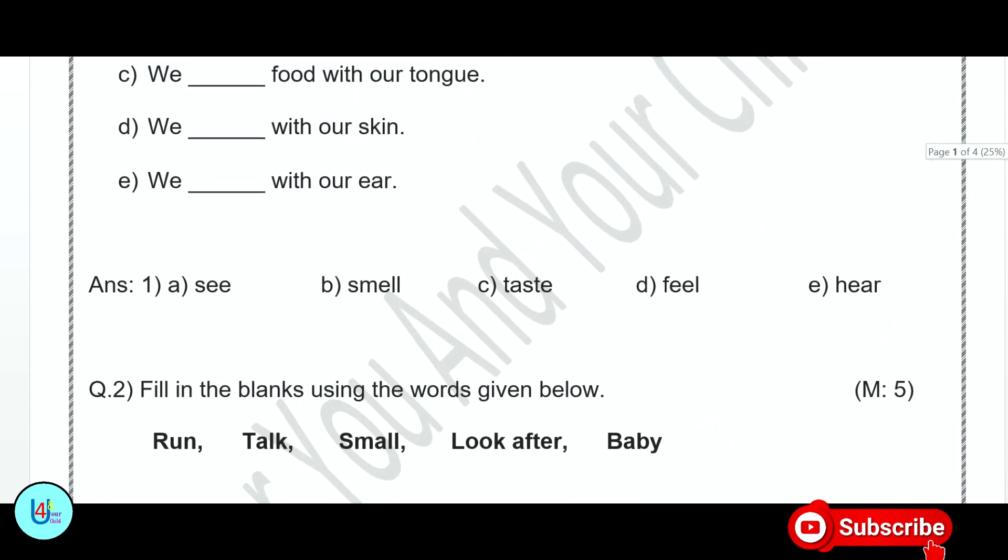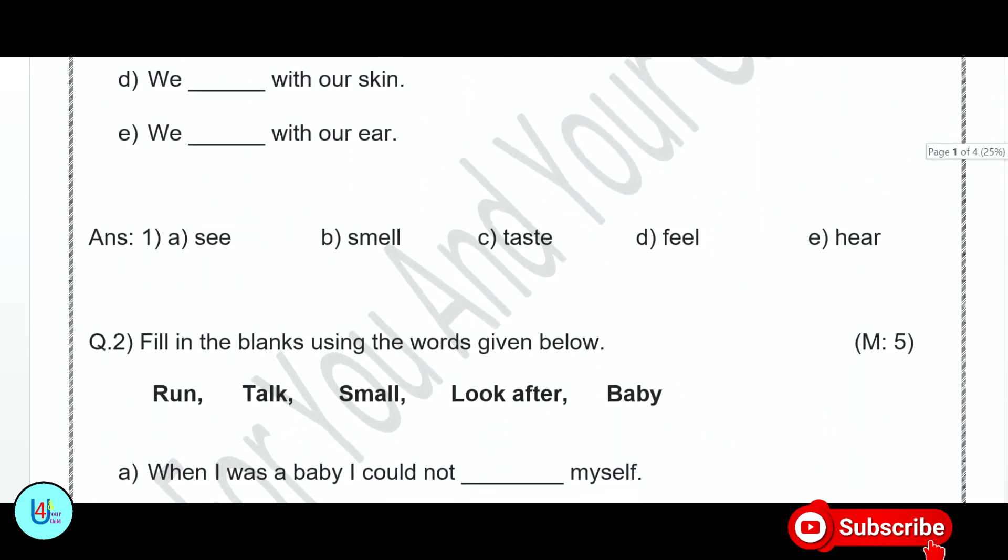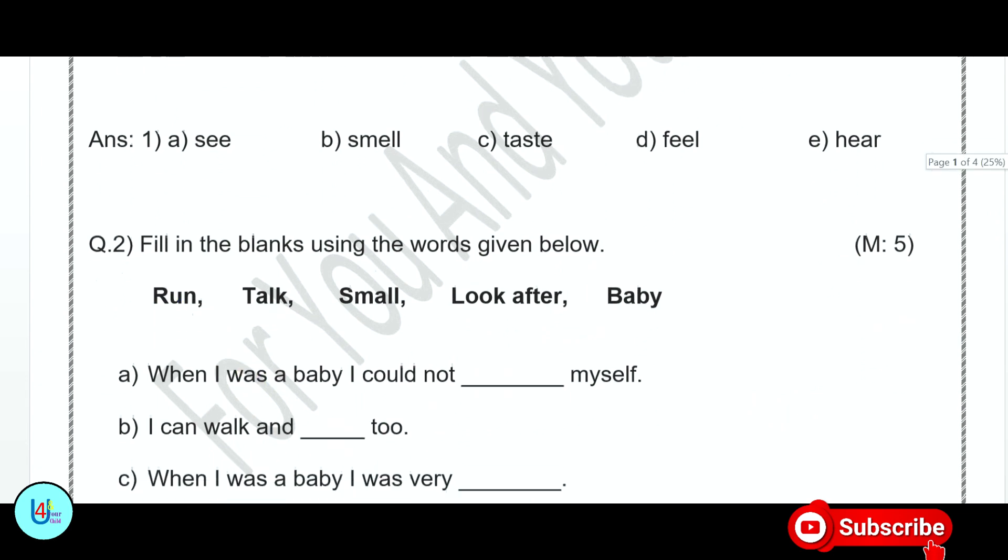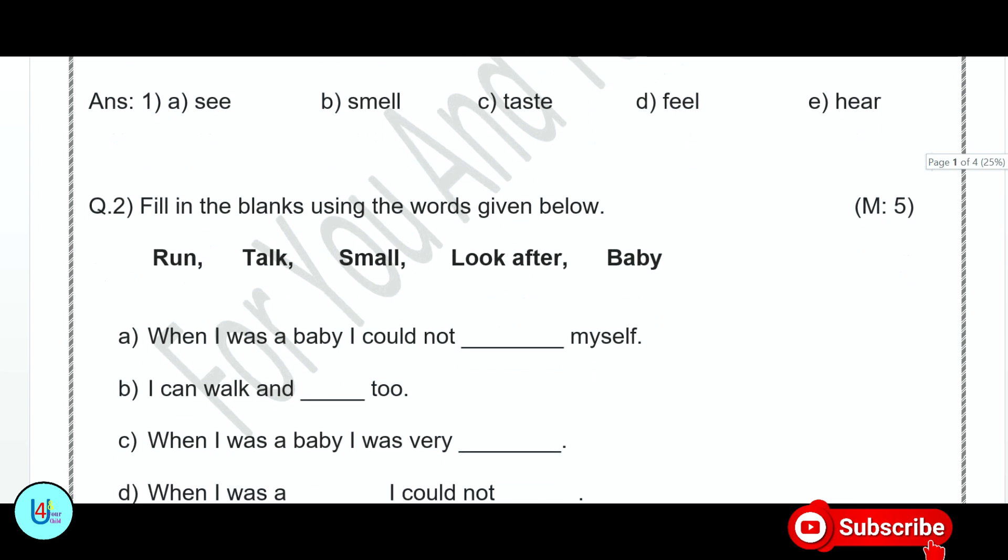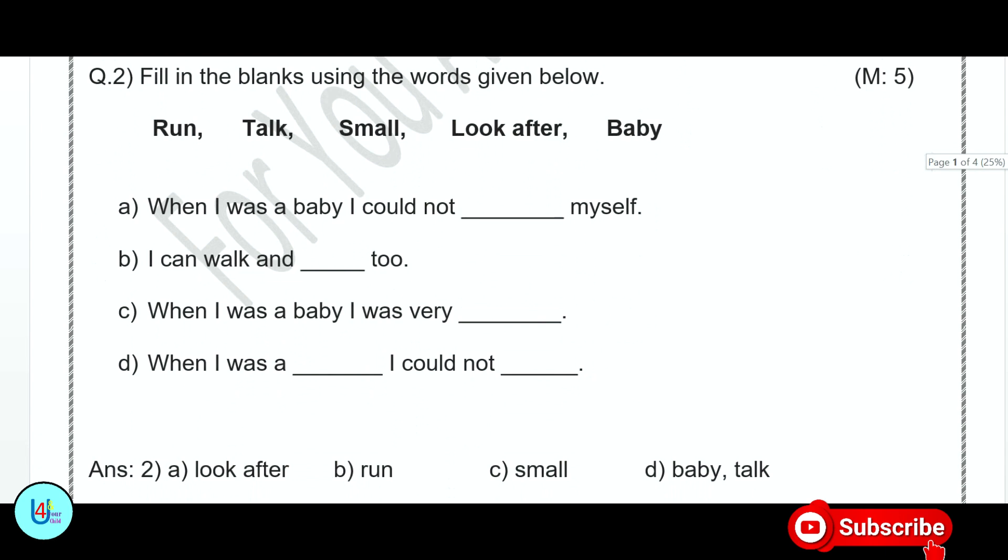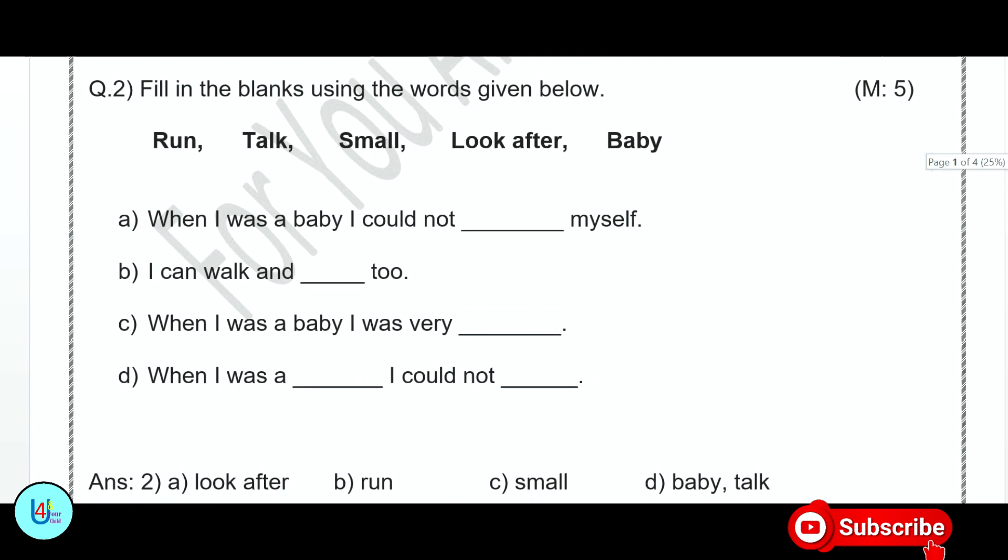Words are run, talk, small, look after. When I was a baby, I could not blank myself. What will this answer? Look after. When I was a small child, I couldn't take care of myself. I can walk and blank too. The answer will be I can walk and run too. When I was a baby, I was very small. When I was a blank, I could not blank. When I was a baby, I could not talk.